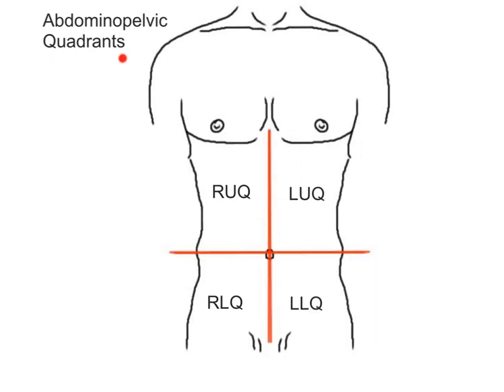The second method is called the quadrant method and is the simpler of the two. It divides the abdominal pelvic cavity into four quadrants, or squares. A mid-sagittal, or median line, and a transverse, or transumbilical line, are drawn intersecting through the umbilicus, which is the belly button, or navel. The quadrant method is commonly used by clinicians to describe the general region of pain, or the presence of an injury, tumor, or some other abnormality.